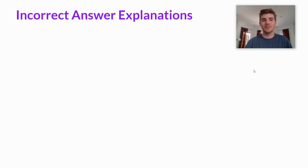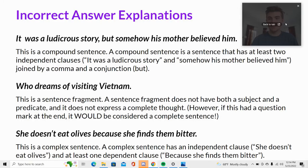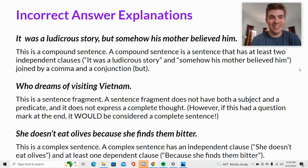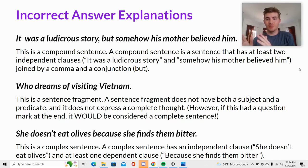Now let's take a look at the different incorrect answer explanations. 'It was a ludicrous story, but somehow his mother believed him' — this is a compound sentence. A compound sentence has at least two independent clauses: 'it was a ludicrous story' and 'somehow his mother believed him,' joined by a comma and the conjunction 'but.'